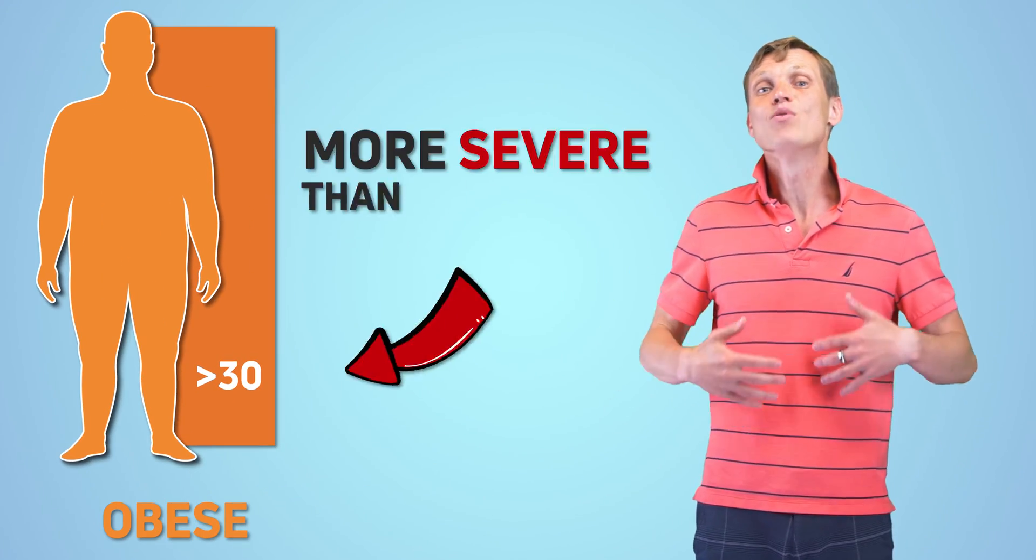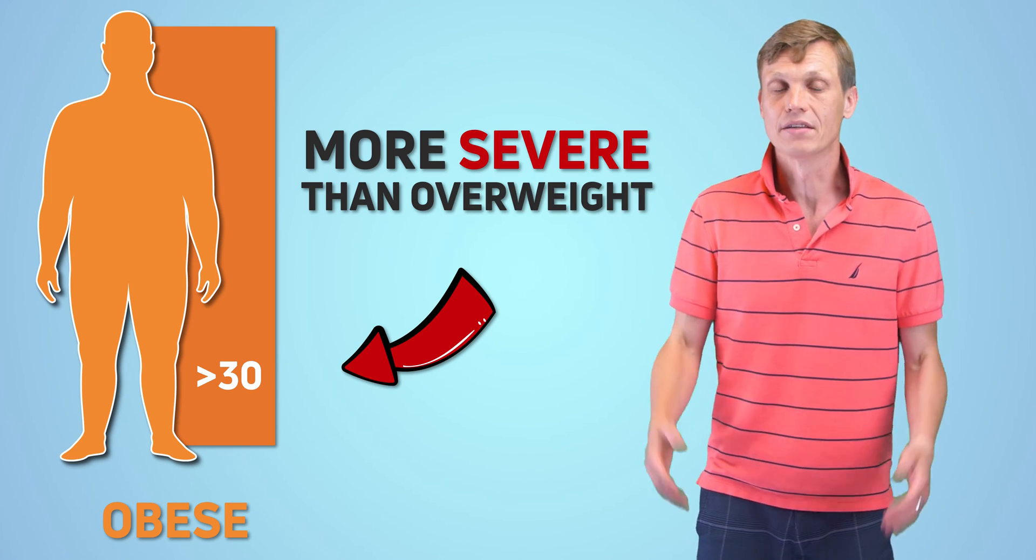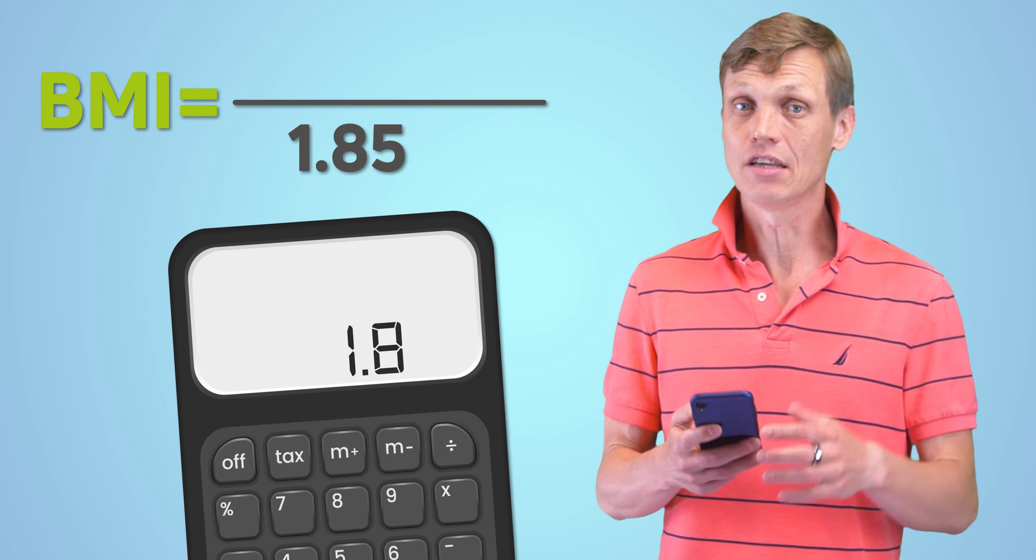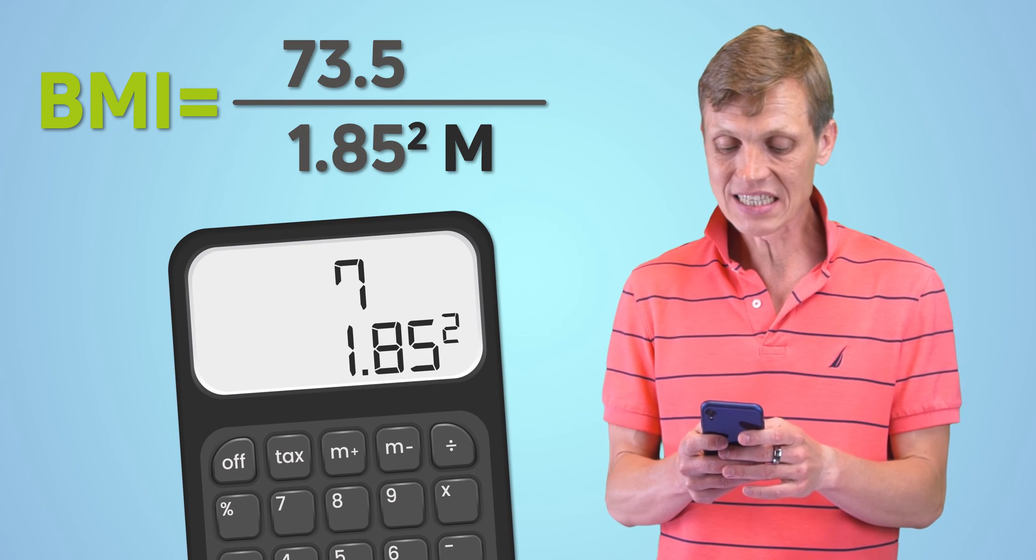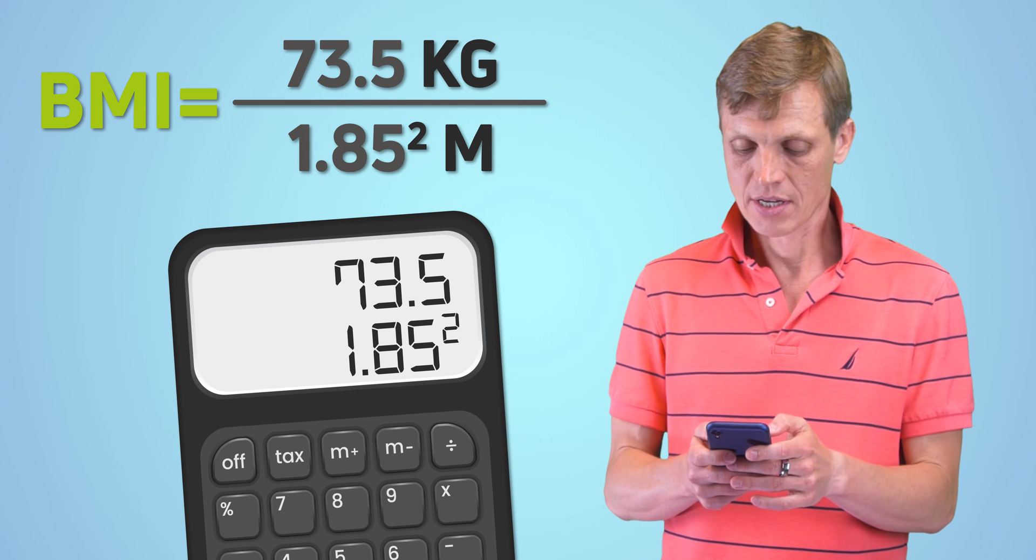As an example, let's calculate my BMI. My height is 185 centimeters and my weight is 73.5 kilograms. So, my BMI is 15,000.